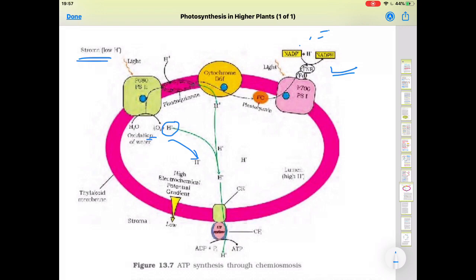This causes a difference in proton concentration between the inside of the lumen and outside in the stroma. Because of this difference, when H+ ions move from the lumen out into the stroma through the ATPase enzyme, ATP generation occurs. This is the process by which ATP is produced.